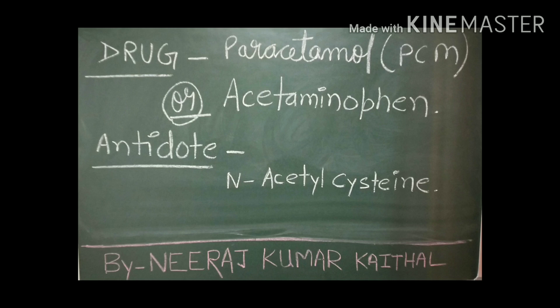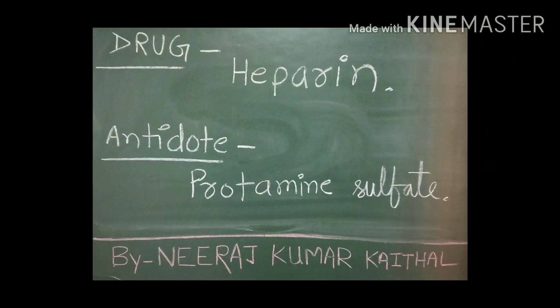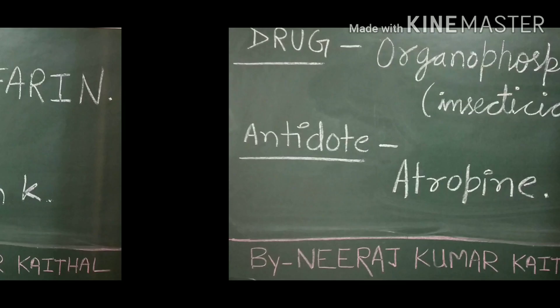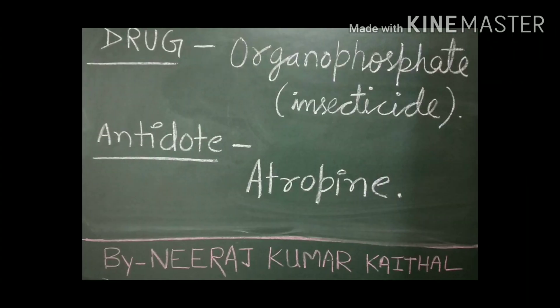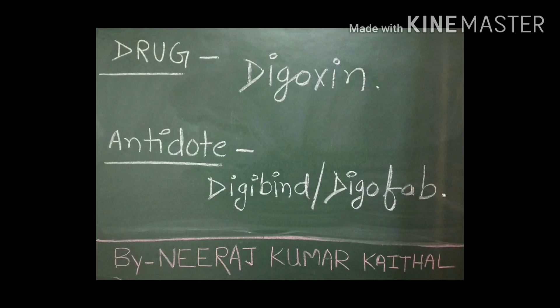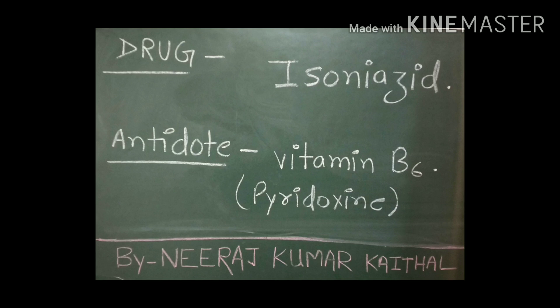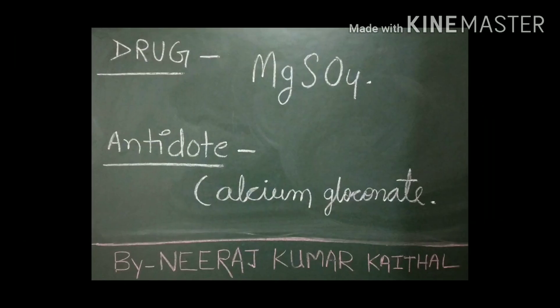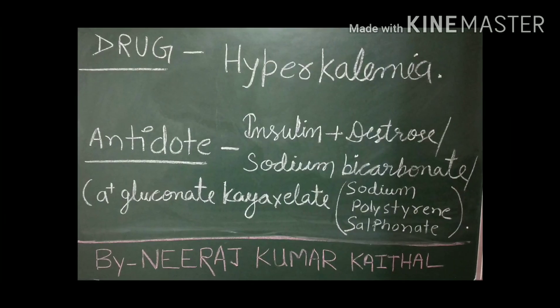Paracetamol, also known as PCM or acetaminophen — antidote: N-Acetylcysteine. Heparin — antidote: Protamine Sulphate. Morphine — antidote: Naloxone. Warfarin — antidote: Vitamin K. Organophosphate — antidote: Atropine. Digoxin — antidote: Digibind or Digifab. Isoniazid — antidote: Vitamin B6 or Pyridoxine. Non-specific poisoning — antidote: Activated Charcoal, known as the Universal Antidote. MgSO4 — antidote: Calcium Gluconate.